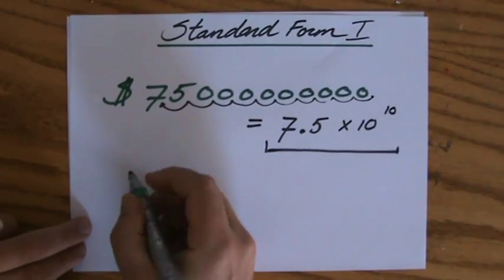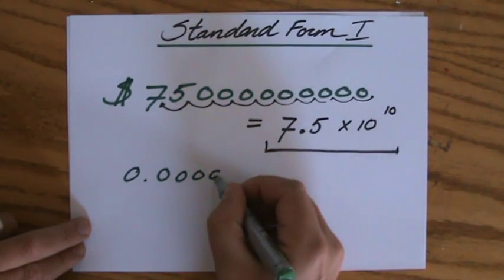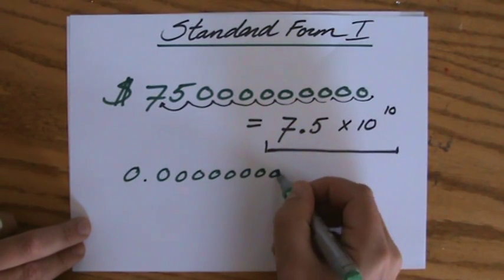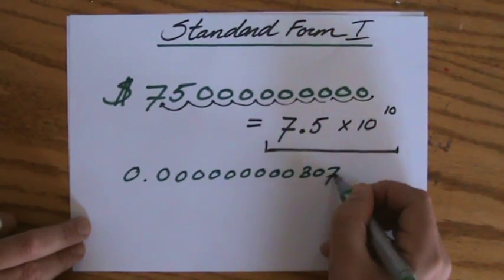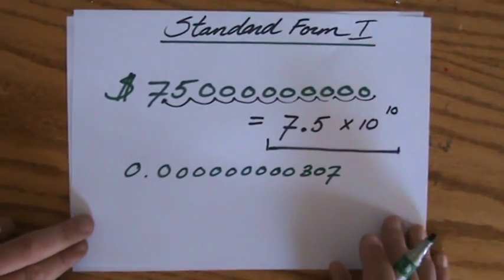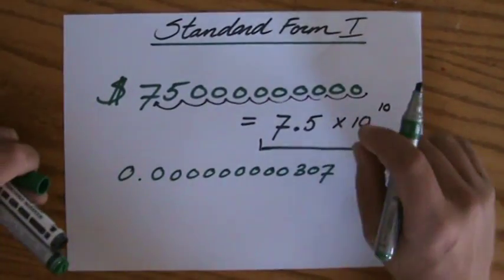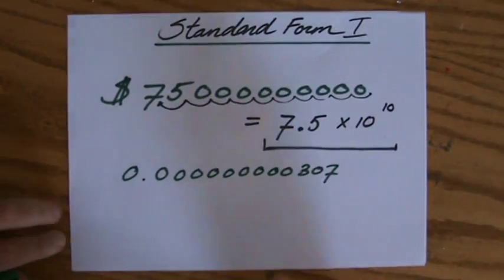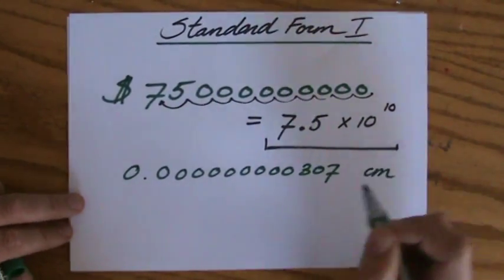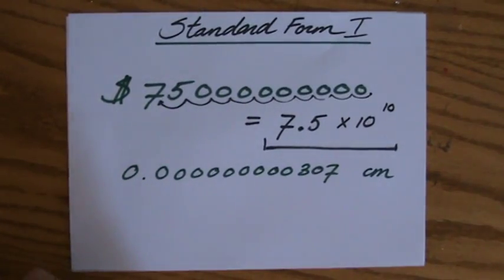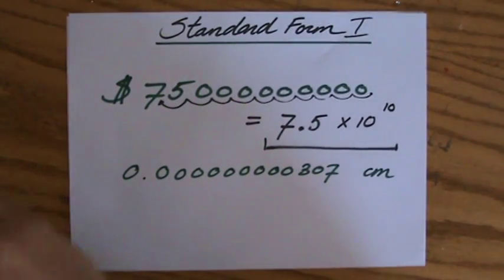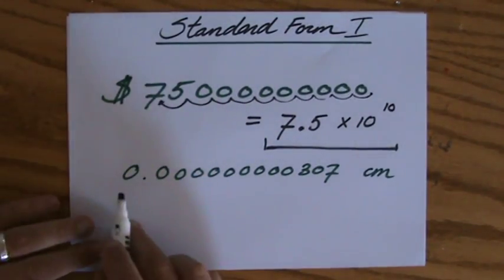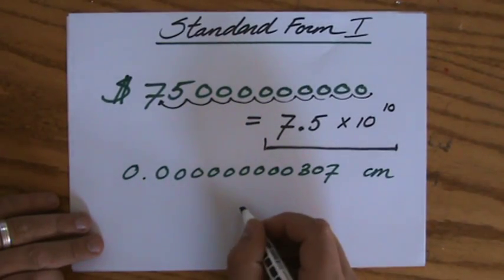For instance, 0.00000000307. Okay. Let's say that is the diameter of some sort of bacteria or virus or whatever, I don't know, centimeters. I have no idea if that is actually true because I'm not a scientist. But we have to rewrite that in standard form because this is just too difficult for us to understand.